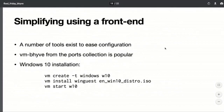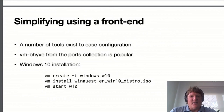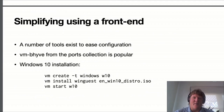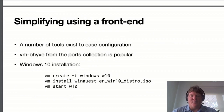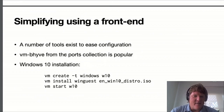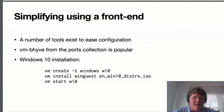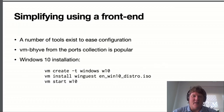That's all a bit complicated to have to do every time. So a number of tools have sprung up to make this easier — generally when you want to run a virtual machine you're not interested in the minutiae of PCI hierarchy or device types, you just want networking, a disk, and to be able to connect. A very popular front end is vm-bhyve. Comparing the previous command, this is quite a lot simpler: you basically tell it you want to create a Windows machine, install it, and start it — quite a lot simpler from a user perspective.